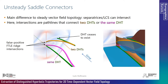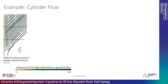The main difference from steady vector field topology is that separatrices in unsteady vector field topology can intersect. In this case, streak manifolds of either two different or the same hyperbolic trajectory intersect along a pathline. Such a pathline manifests as a false positive FTLE-ridge intersection; however, it is not a generator of the unsteady flow topology and is therefore not a distinguished hyperbolic trajectory.